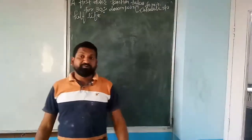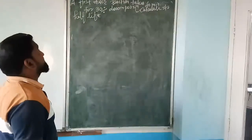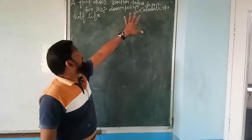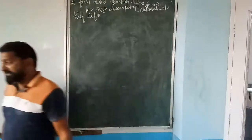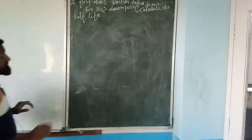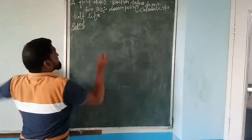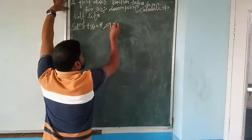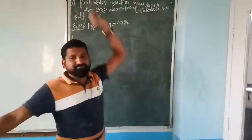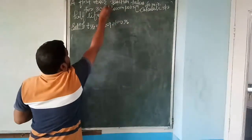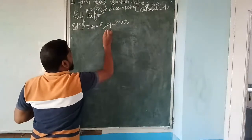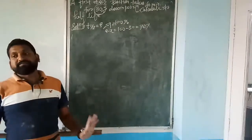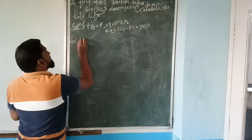Next problem: a first order reaction takes about 40 minutes to decompose 30%. Calculate the half-life period. Solution: A₀ = 100%, decomposition = 30%, so (a - x) = 70%. Half-life asked means T½ is unknown. First calculate k using k = (2.303/T) × log(A₀/(a-x)) = (2.303/40 min) × log(100/70).